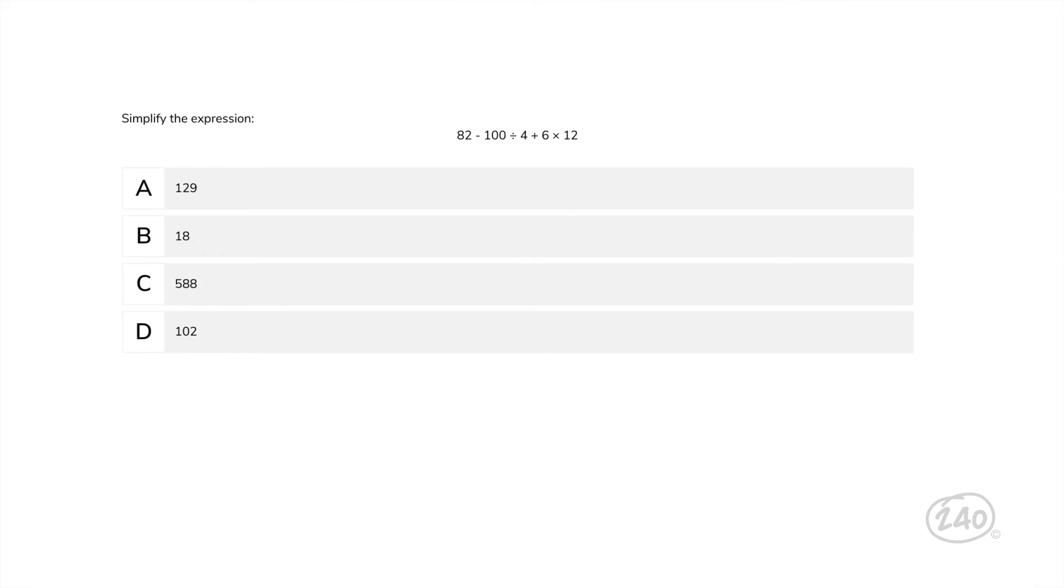Remember for the number and quantity category, I told you about how you'll need to remember the order of operations? Let's look at how that's reflected in a question. Simplify the expression. 82 minus 100 divided by 4 plus 6 times 12. As we start to run through PEMDAS, there are no parentheses or exponents in this expression, so we can skip those steps. Then we move on to multiplication and division from left to right. Finally, we can simplify the remaining addition and subtraction from left to right, meaning this is our best answer. One question down.